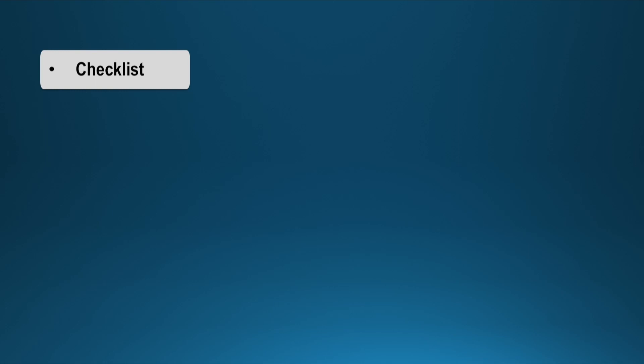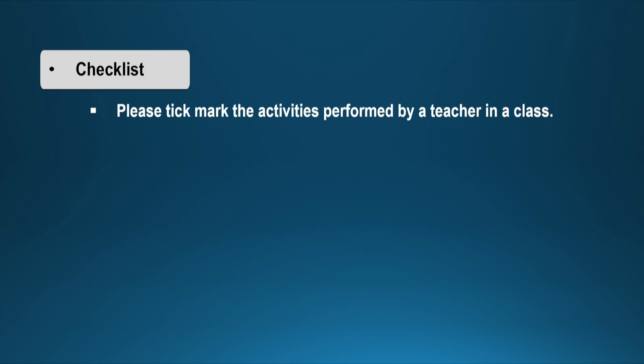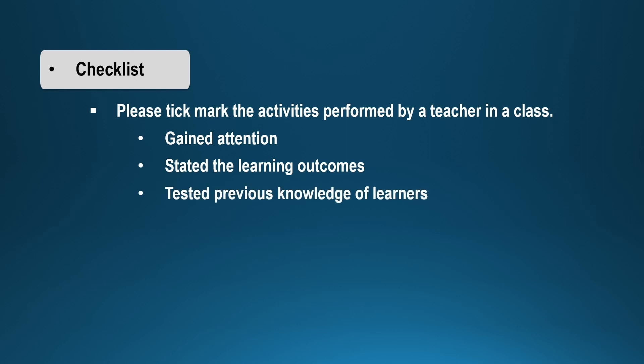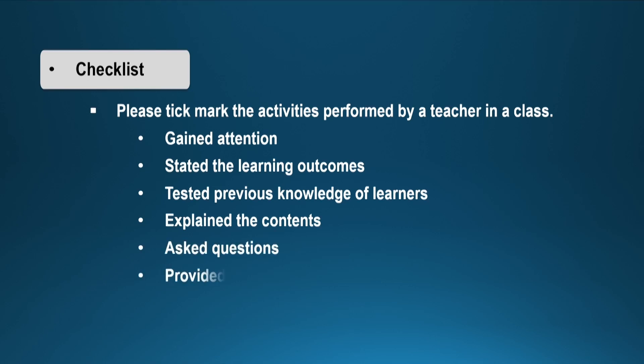This is an example of a checklist: 'Please tick mark the activities performed by a teacher in class.' Below it, the various activities which a teacher performs in a classroom situation are enlisted — gained attention, stated the learning outcomes, tested the previous knowledge of learners, explained the content, asked questions, provided feedback, and so on. The person observing the ongoing classroom activity has to put a tick mark on the activities performed by the teacher.